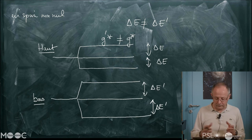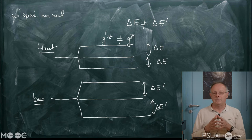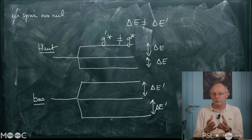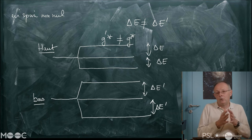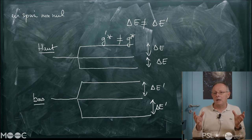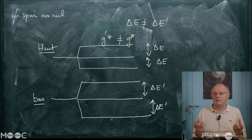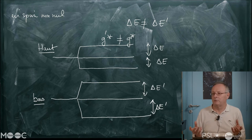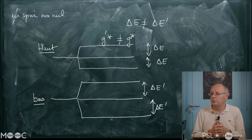Dans le cas anormal, on a plus que trois transitions possibles. Sur le ciel, on observera les centres de gravité : le centre de gravité de la composante π (sans variation d'énergie), le centre de gravité de la composante σ−, et celui de la composante σ+. La majorité des raies spectrales en présence de champs magnétiques se subdivisent en bien plus que trois sous-niveaux ou trois transitions.